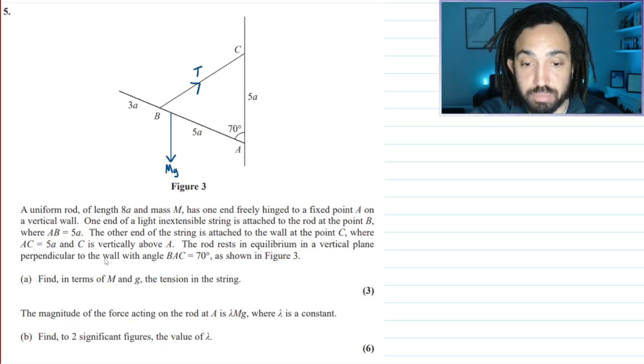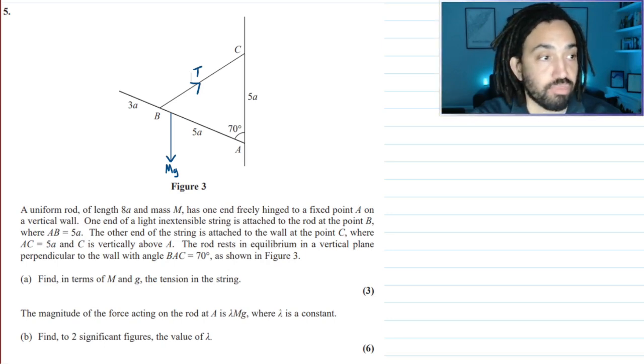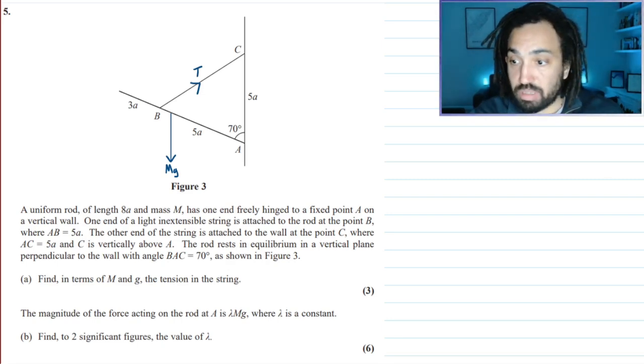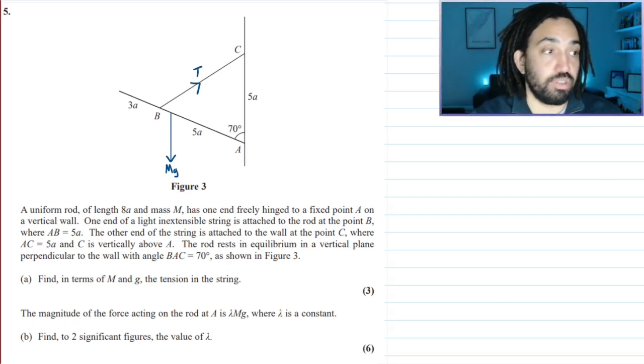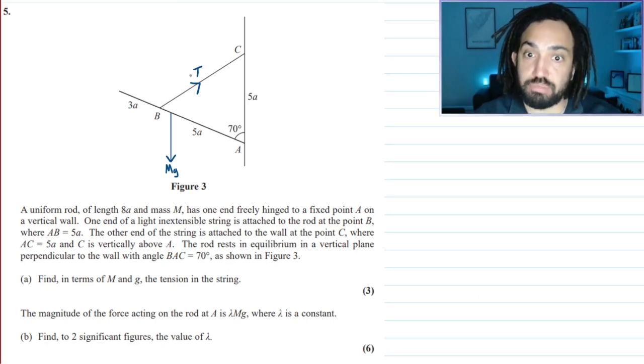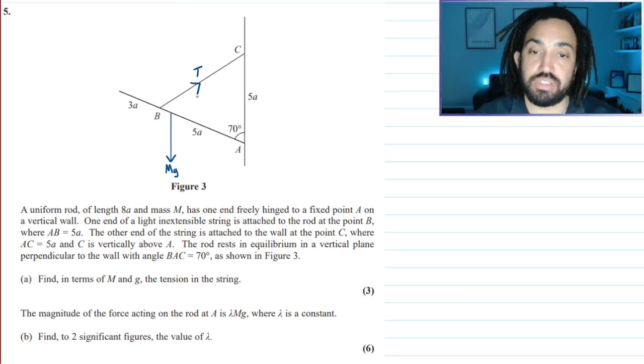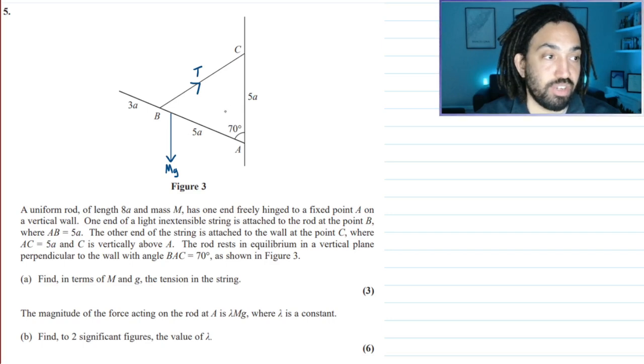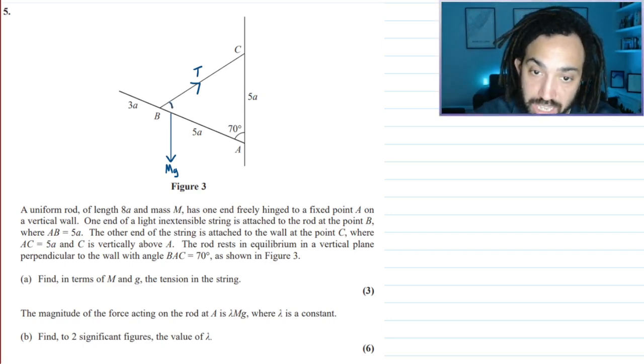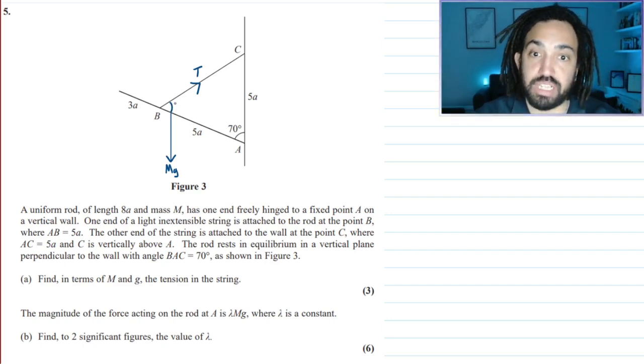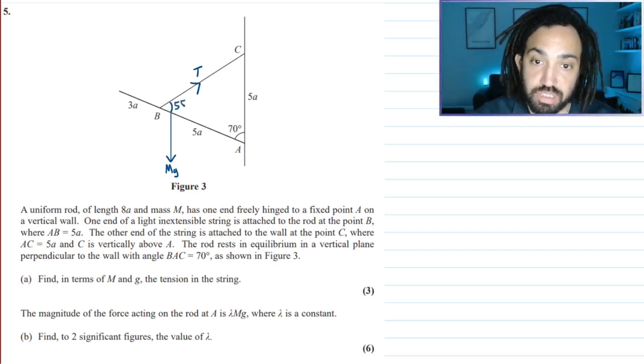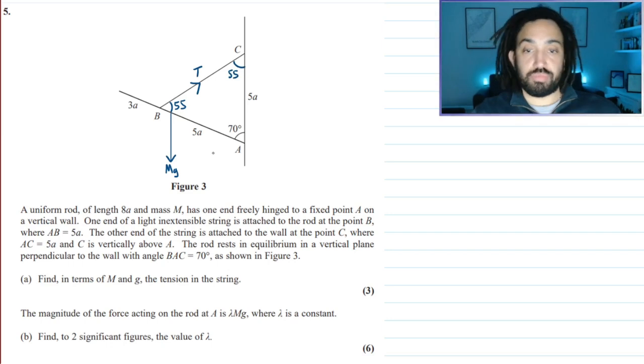The rod rests in equilibrium in a vertical plane. We've got this angle 70. It says find, in terms of m and g, the tension in the string. I need to find components of tension, but there's no angle there. What we do know is we've got this 5a on either side of this triangle, making it isosceles. So that angle in there must be 180 minus 70 halved, which is 55, and this angle as well will be 55.